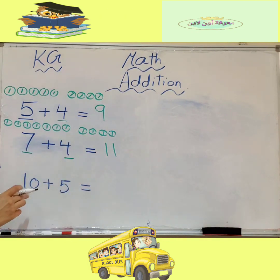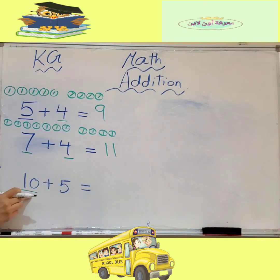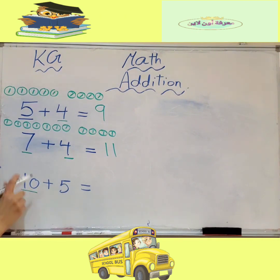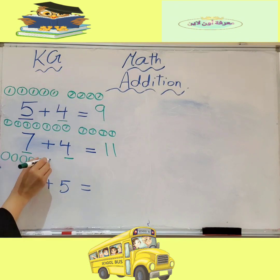So seven plus four equals ten. The next example is ten plus five. I will draw ten circles: one, two, three, four, five, six, seven, eight, nine, ten. And the next number is five — I will draw five circles.